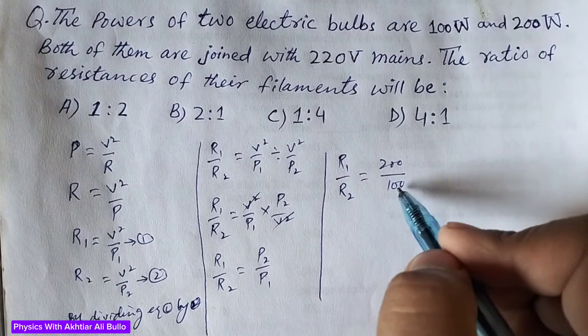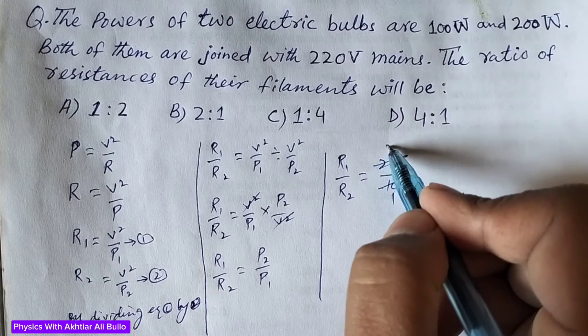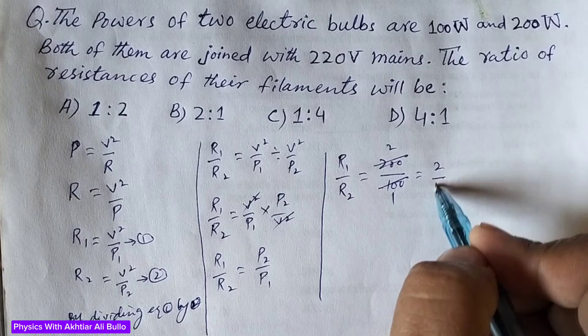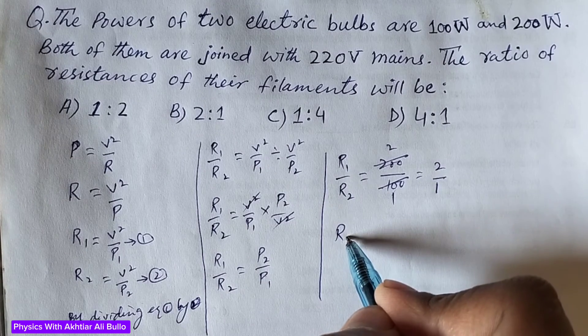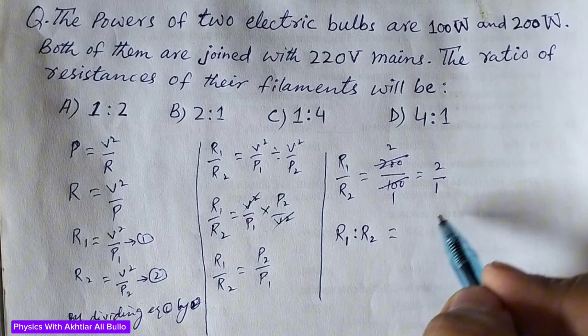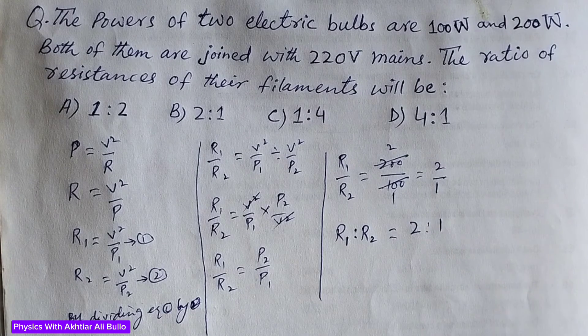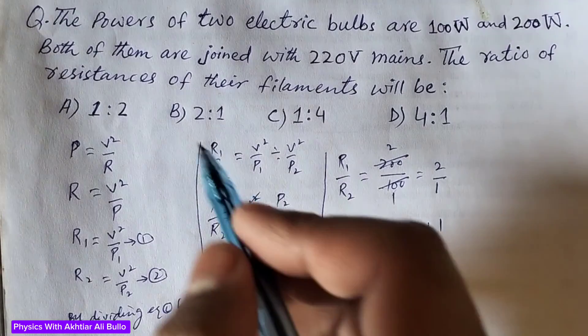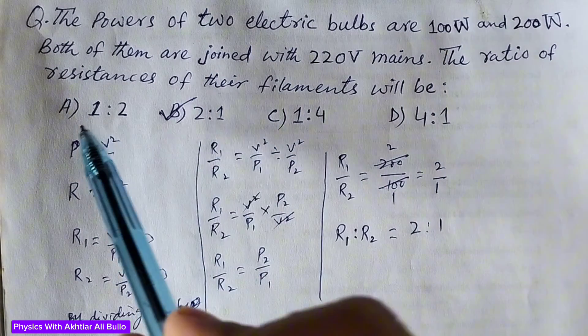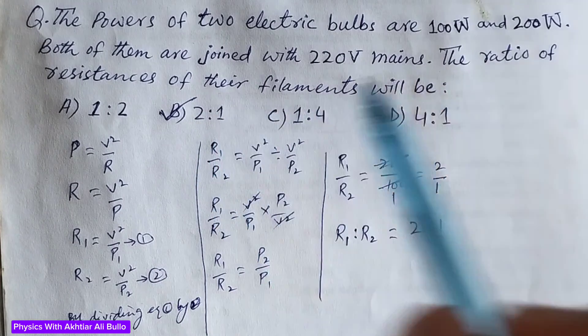So 100 on 100 is one and 200 is two, so R₁ upon R₂ will be equal to 2 upon 1. R₁ ratio R₂ will be equal to 2 ratio 1. So the correct option will be B, 2 ratio 1. This means the ratio of resistances of their filaments will be 2:1.